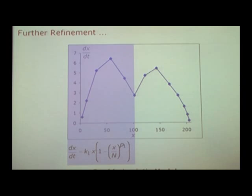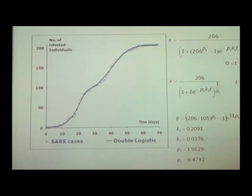First part looks something like this with parameters k1 and p1. Second part, same kind of equations with parameters, different parameters k2 and p2. So now we have four parameters, p1, p2, k1, k2, to estimate from the data set. And we can do that, and if we do that, this is the solution that we get.